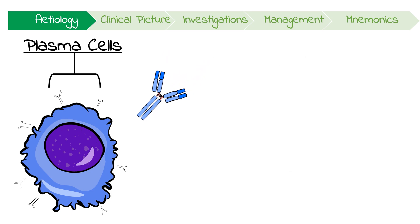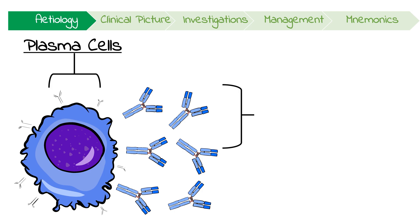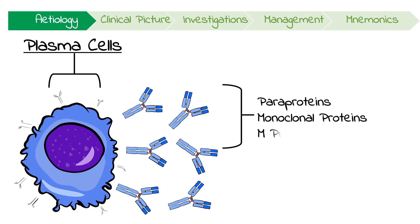In multiple myeloma, there's a massive proliferation of one type of plasma cell, meaning the same immunoglobulin is produced in vast quantities. The identical proteins are often referred to as paraproteins, monoclonal proteins or M-proteins.